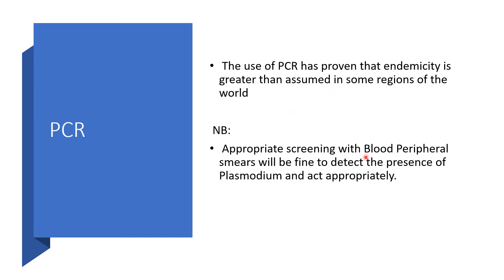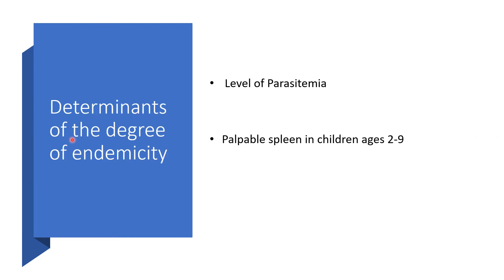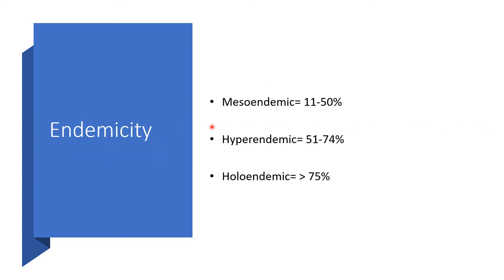Appropriate screening with peripheral blood smears will be sufficient to detect the presence of the Plasmodium, then lead us to appropriate action. The timeline of the degree of endemicity: the level of parasitemia and the palpable spleen in children ages 2 to 9 will give us the clue to the degree of endemicity. Endemicity could either be mesoendemic when it is about 11 to 50%, hyperendemic when it is between 51 and 74%, or holoendemic when it is greater than 75%.